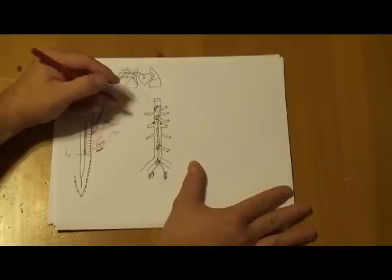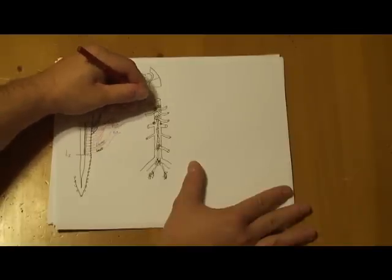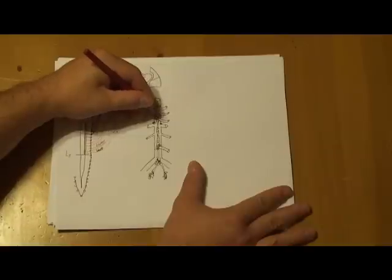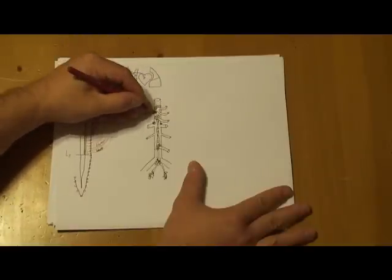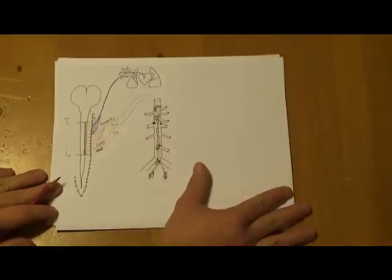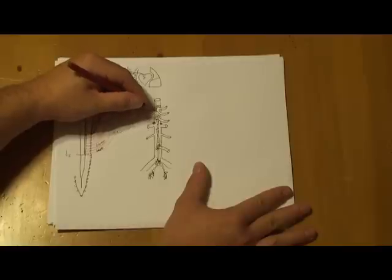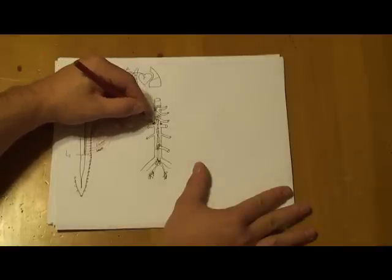The greater splanchnic nerve synapses at the celiac ganglia right there. The lesser is going to send its axons down to synapse in the superior mesenteric and aortico-renal ganglia. Then the least will send its axons down to synapse in the aortico-renal ganglia.